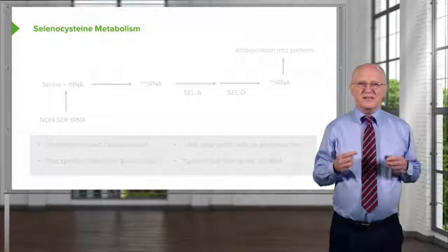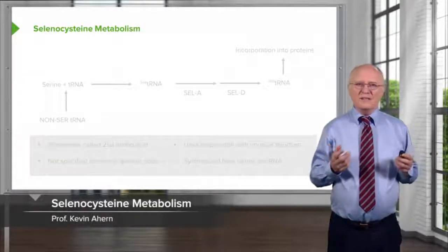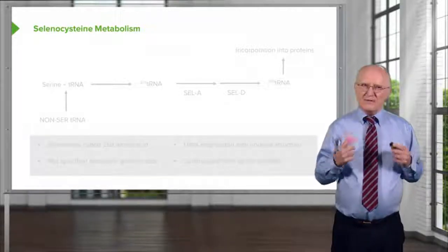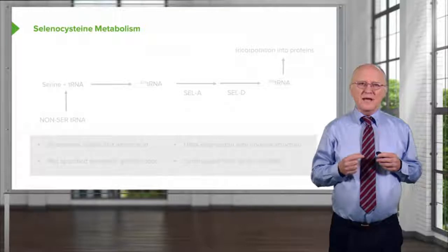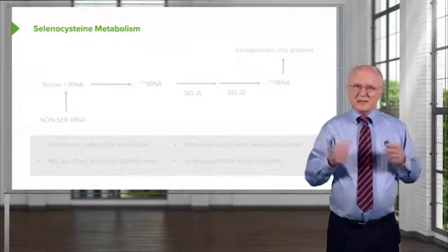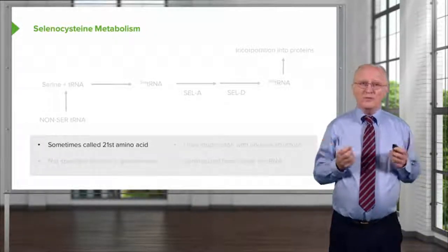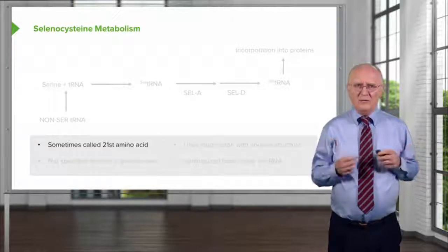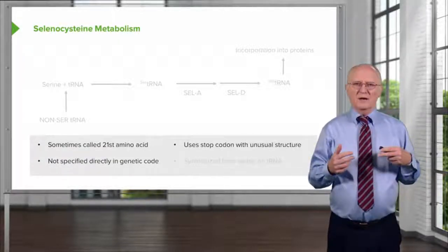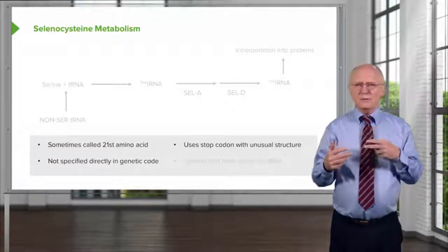Another member of the cysteine family is one of the rare amino acids discussed earlier — selenocysteine. This amino acid does not normally occur in proteins; it very rarely appears. Its way of appearing in proteins is unusual, and its synthesis is also a little unusual. Selenocysteine is sometimes called the 21st amino acid because it's not coded for in the genetic code — it uses a stop codon in the translational process to get into a protein.